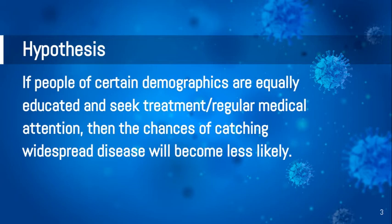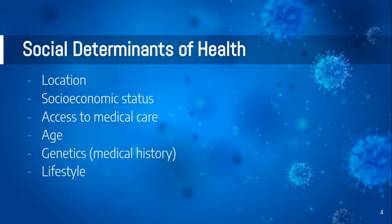I talk about the education part a little more at the end. Social determinants of health, which I mentioned earlier, include anything from location to your socioeconomic status, your access to medical care, your age, your genetics or medical history, and your lifestyle. All these things kind of intersect and affect each other in someone's life health-wise.